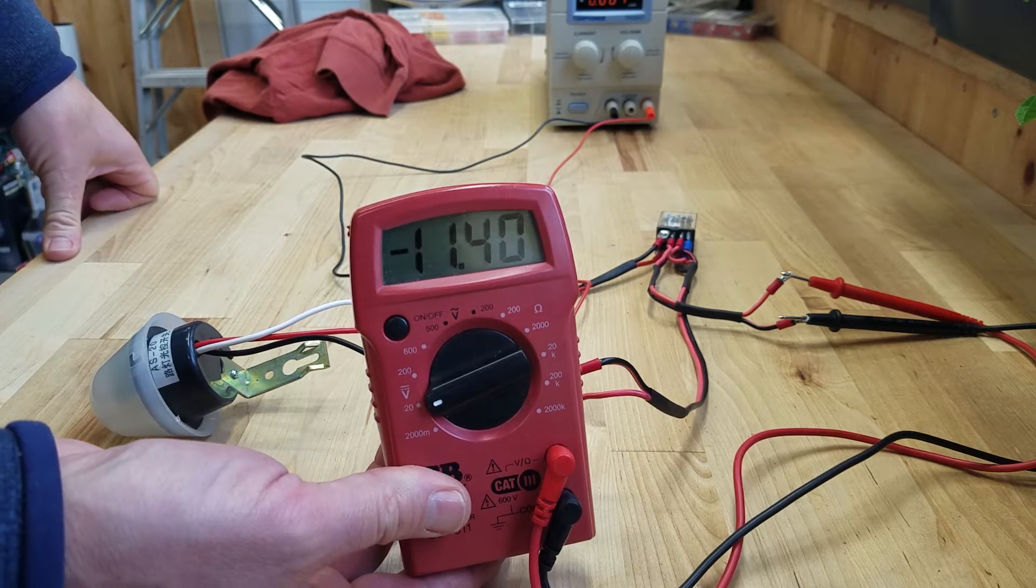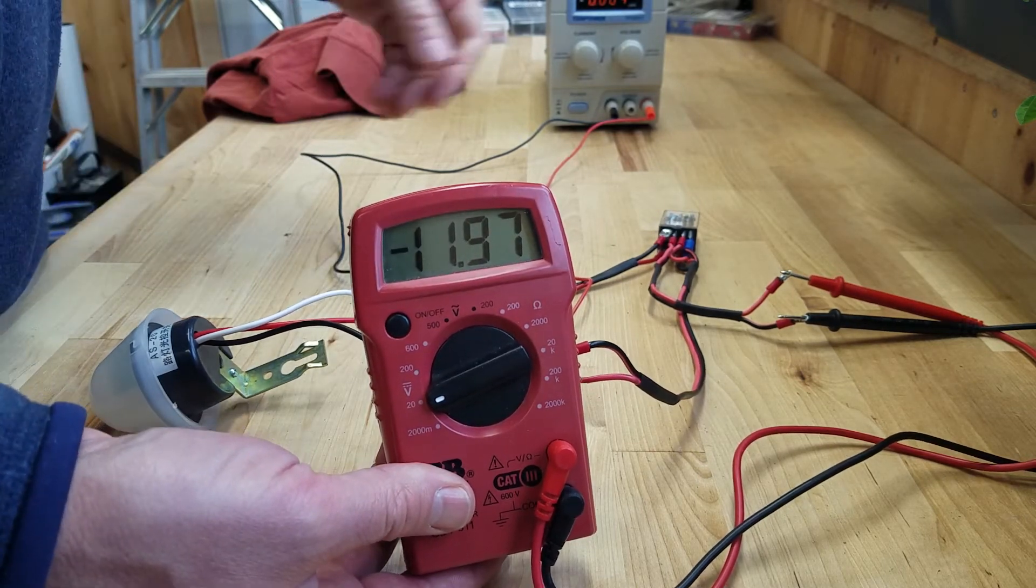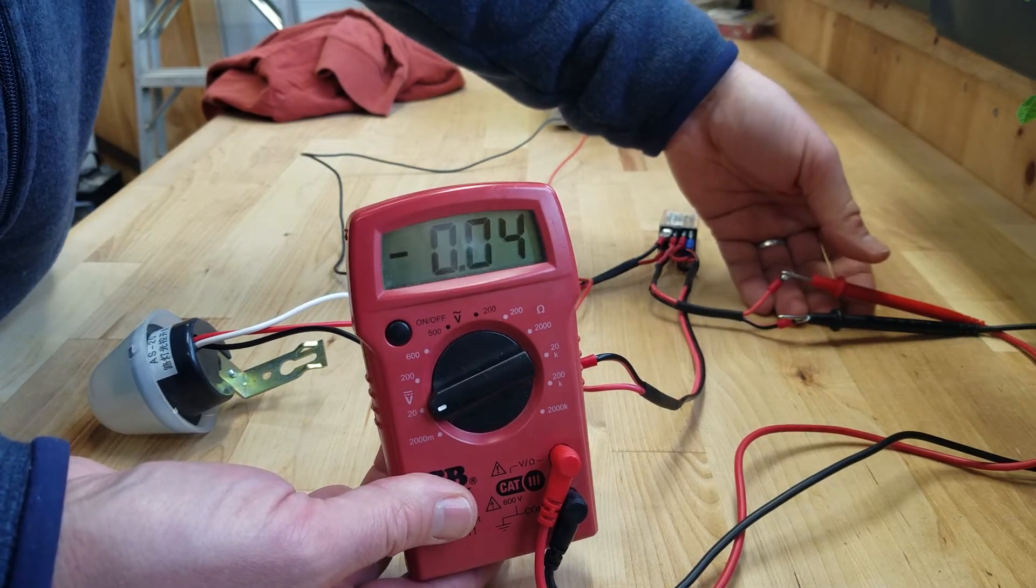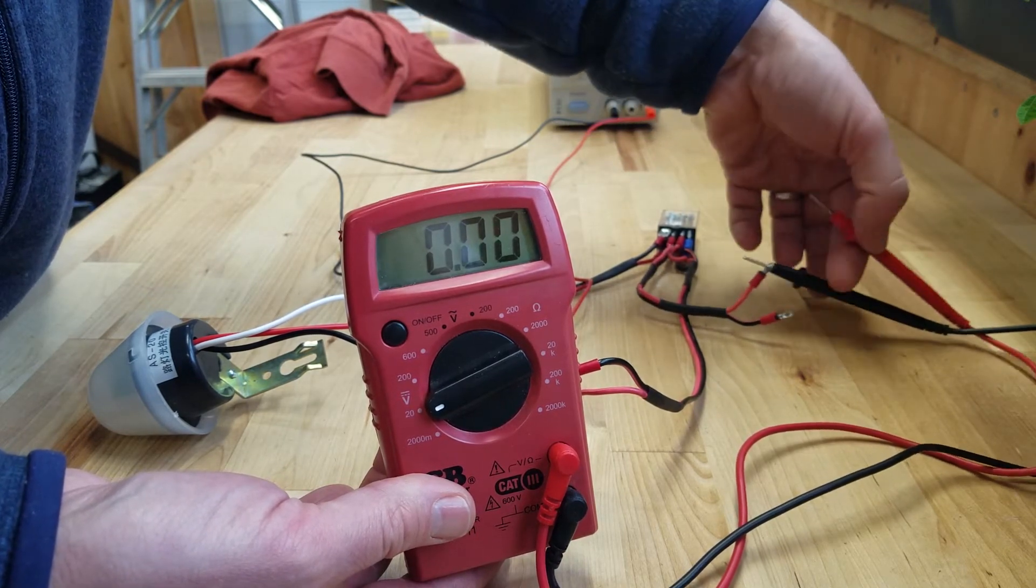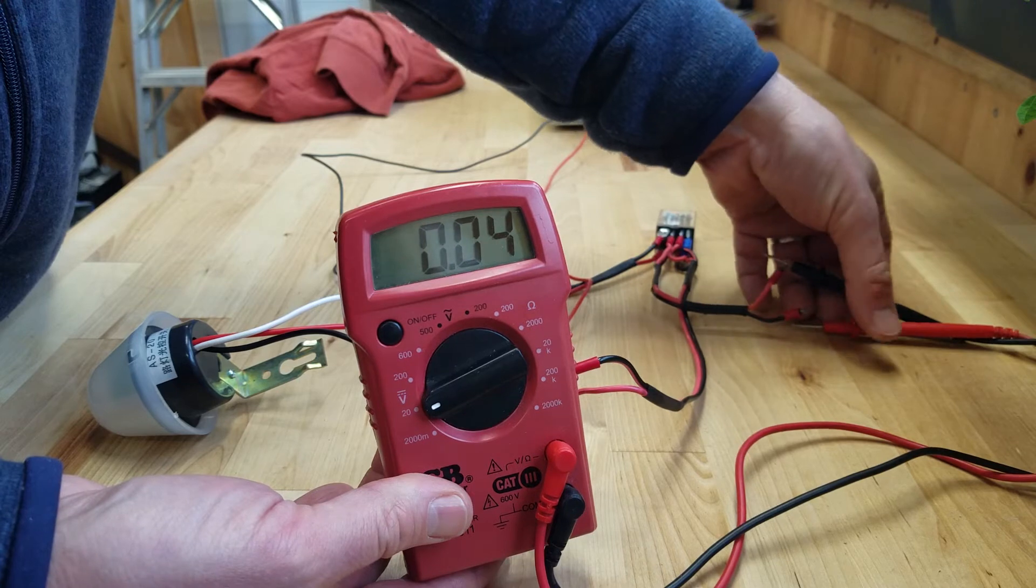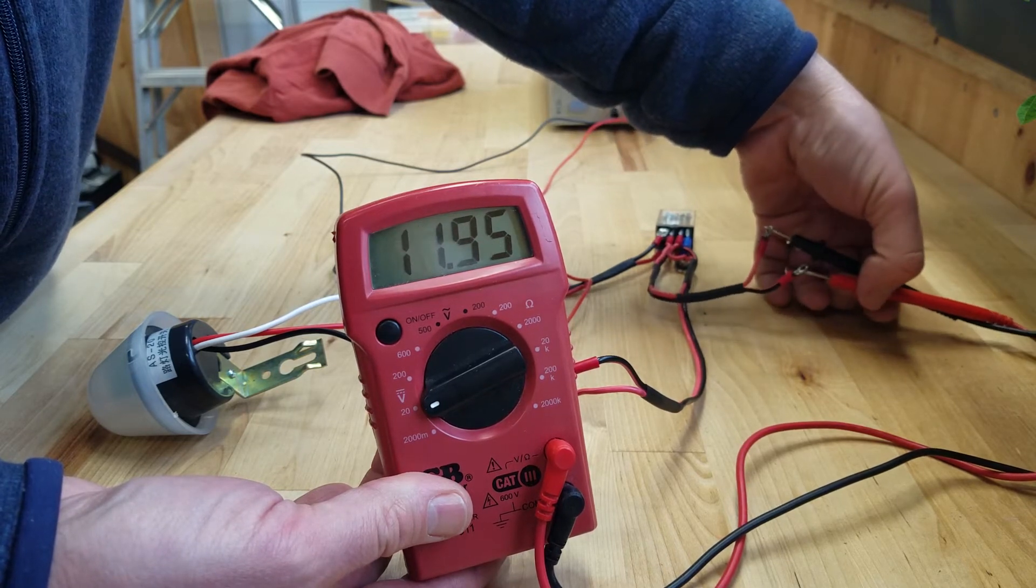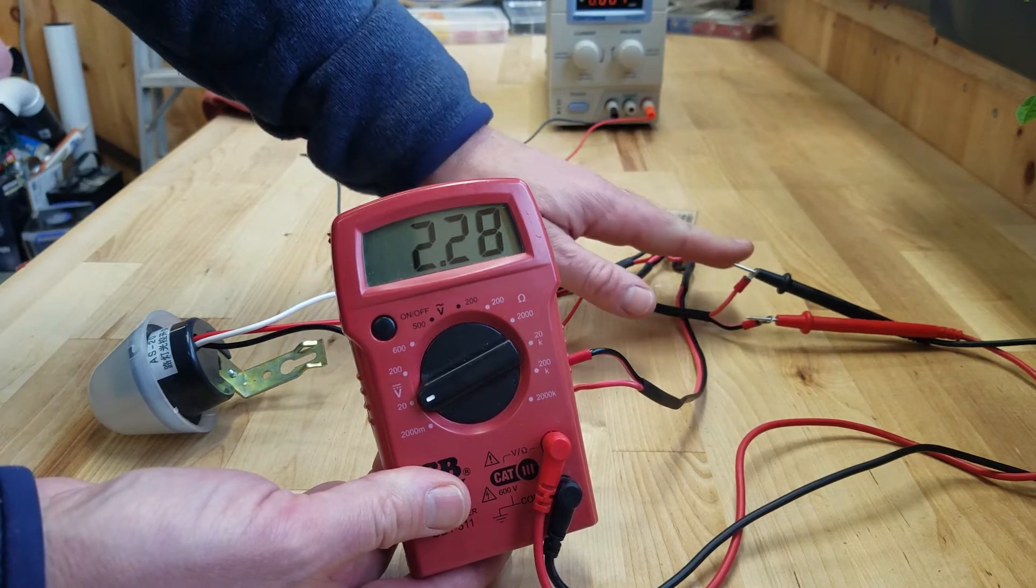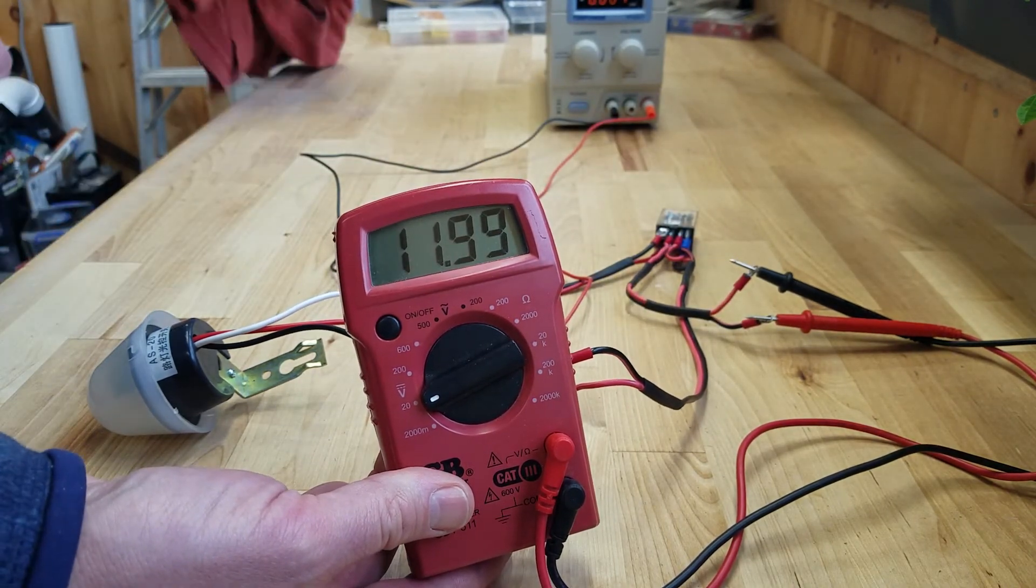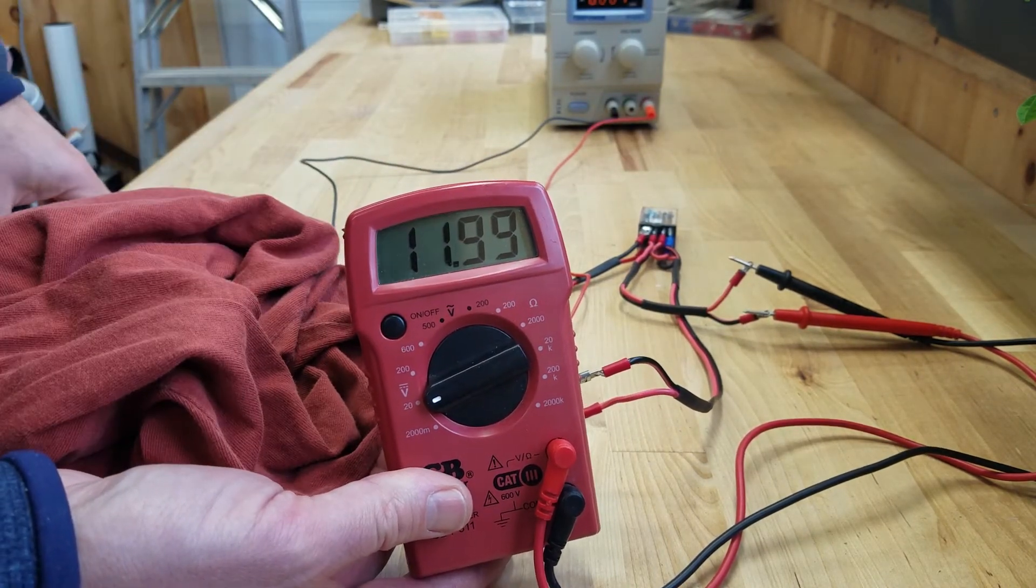If you hook all this up and your motor runs backwards from what you want, the easiest way to do it is just switch the leads to your motor. So I'm switching those two. So now you'll get positive power in the day and negative polarity at night.